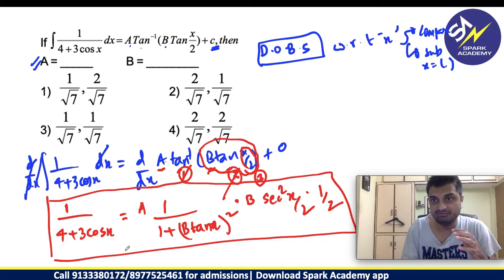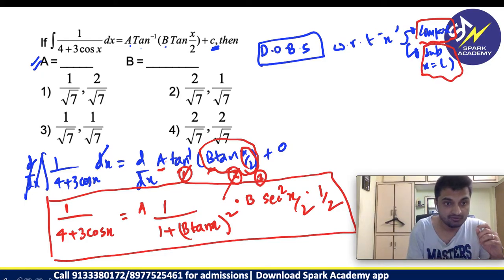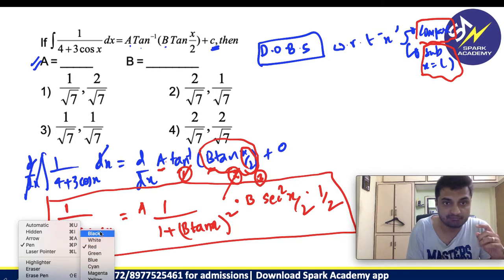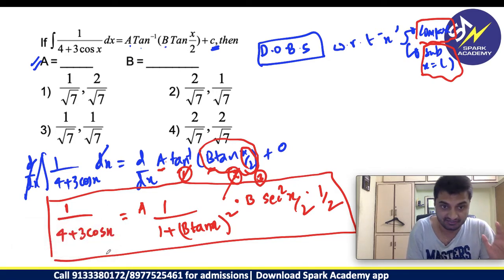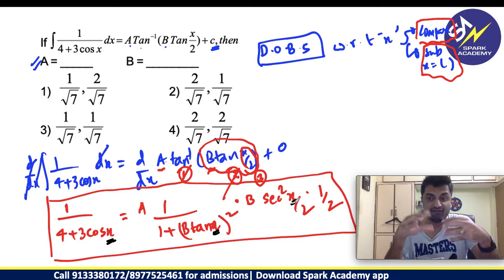How will you find out A and B values? As I told you, we can use comparison method or we can use substitution method. I will show how to use this by substitution method. What is that one thing you are observing in both LHS and RHS? Here, it is a variable in x. Here also, it is variable in x.